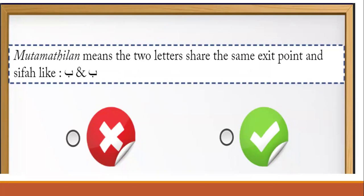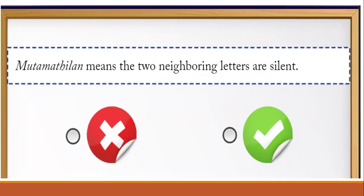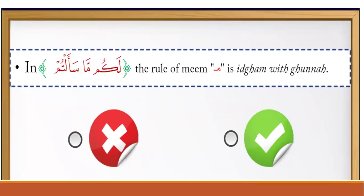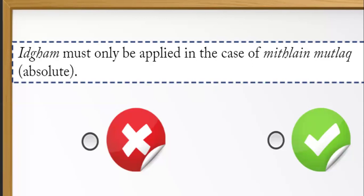True or false: mutamathilan means the two letters share the same articulation point and sifah, like ba and ba — that is correct. Mutamathilan means the two borrowing letters are both silent — that is wrong. In لكم ما سألتم, the rule of mim is idgham with ghunnah — that is correct, it is idgham with ghunnah. Idgham must only be applied in the case of mutamathilan مطلق (absolute) — that is wrong; in مطلق it is izhhar, not idgham.